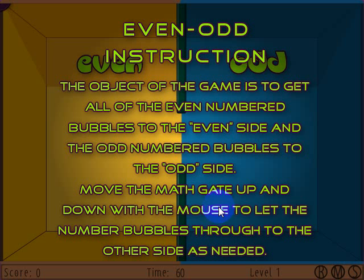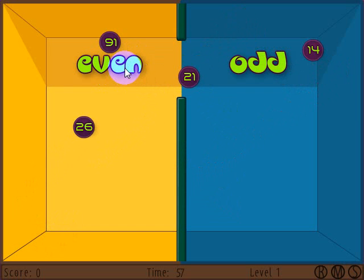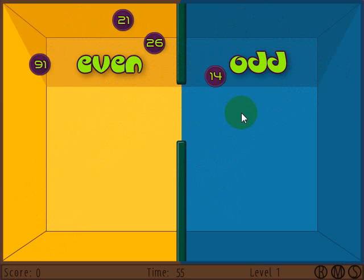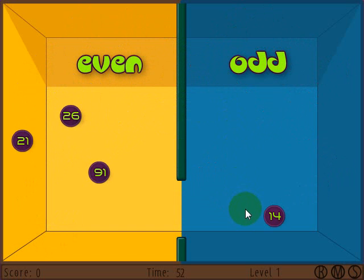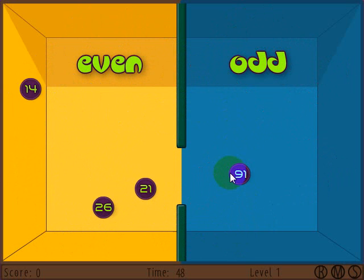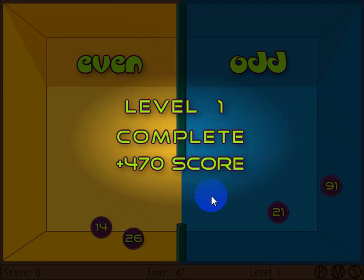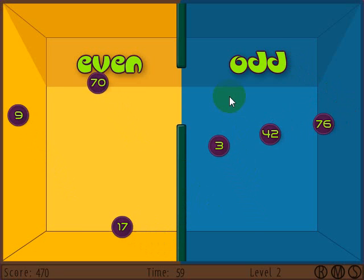Now let's take a look at the even odd version. This is pretty simple. Get the even numbers on this side, the odd numbers over here. Let's go ahead and do that. Put that one through there. And 21. This ought to go through. Don't let the 26 get through. There we go. That's how you play the even odd version.